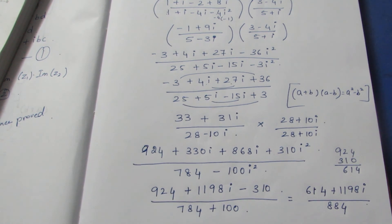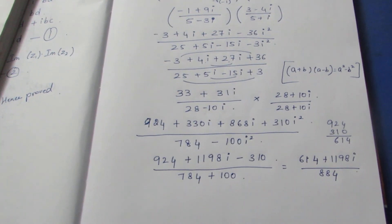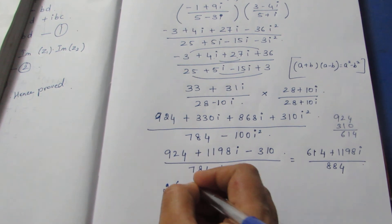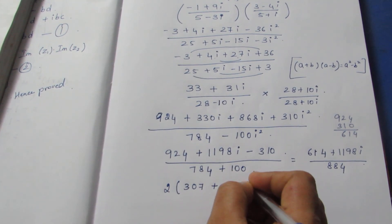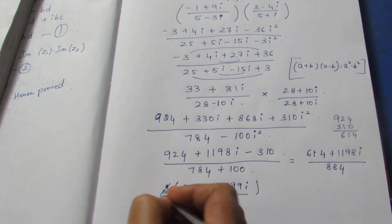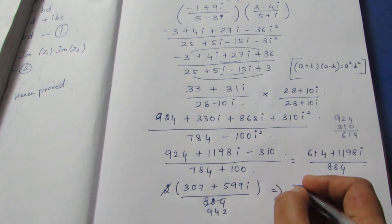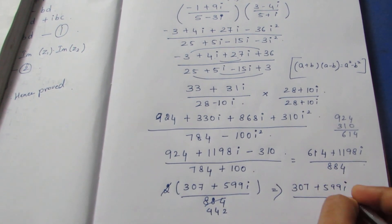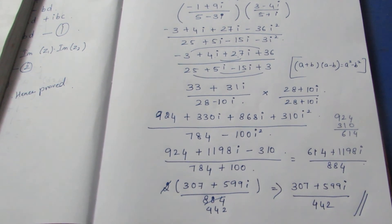We can take 2 as a common factor from the numerator. Taking 2 common outside gives 307 plus 599i, over 884. We can cancel the 2, giving 442. So the final answer is 307+599i/442. This is the final answer for the sum.